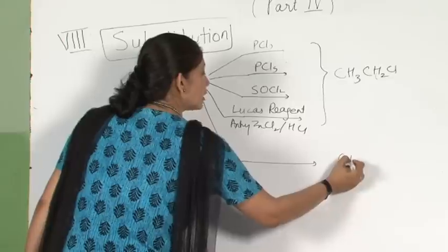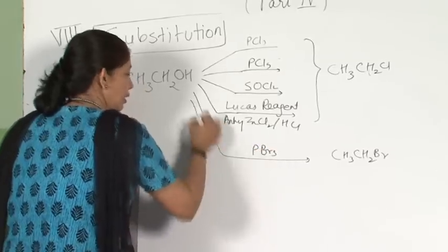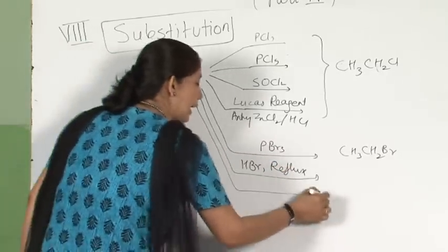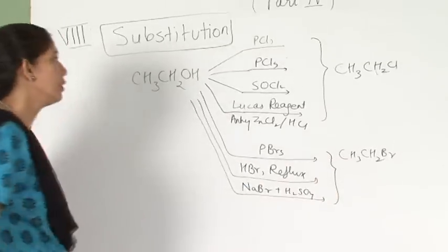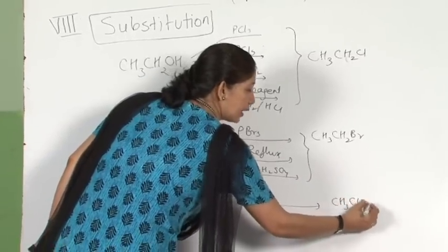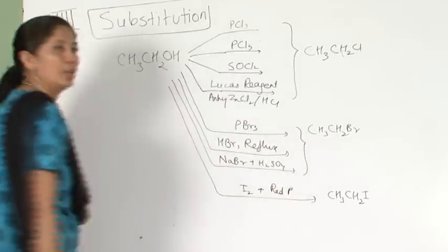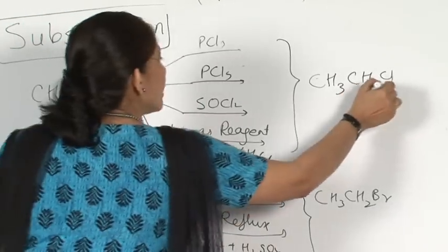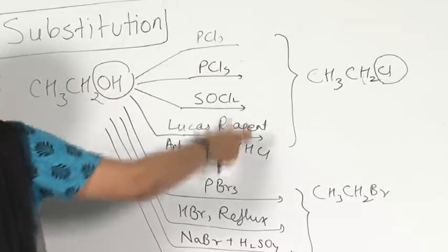Similarly, if I want CH3CH2Br, I go for PBr3, or HBr under reflux, or NaBr in the presence of H2SO4. If I want an iodide — ethyl iodide — I use PI3, meaning I2 in the presence of red phosphorus. In all these cases, OH is simply replaced with the halide.